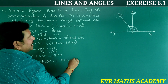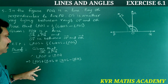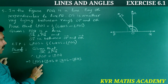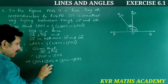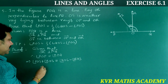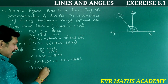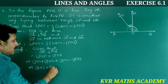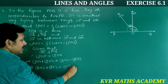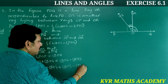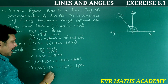Also, angle ROQ equals angle QOS minus angle ROS. So, angle POS plus angle ROS is equal to angle QOS minus angle ROS. Transferring angle ROS to the right side: angle ROS plus angle ROS equals angle QOS minus angle POS.